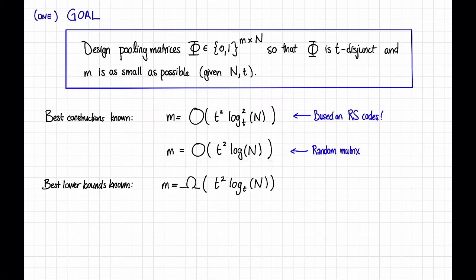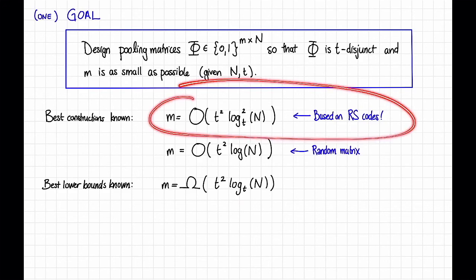There are also extremely fast algorithms for group testing, much faster than the try all of the elements method that we saw on the previous slide. These algorithms can actually run in sublinear time in capital N, actually nearly linear in the number of tests. Some of those algorithms are also based on coding theory, and we might see them in a later video. In the next video, however, we'll focus on this construction, known as the Kautz-Singleton construction, which uses Reed-Solomon codes.